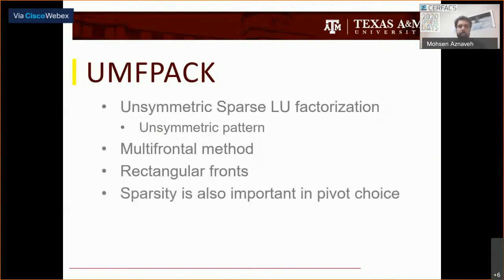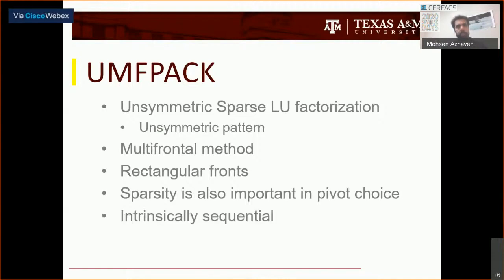Sparsity is also important in pivot choice. What UMFPACK does is, after finding each pivot, it updates the column and row degree and then tries to find the sparsest pivot it can. The design of UMFPACK is intrinsically very sequential — it uses data structures that are very hard to change to make it parallel. So the only way we could proceed is by designing a new algorithm.